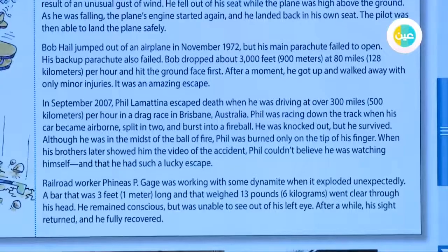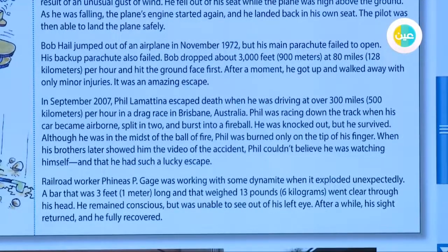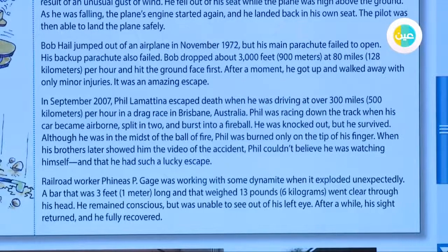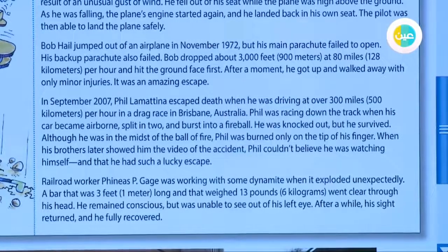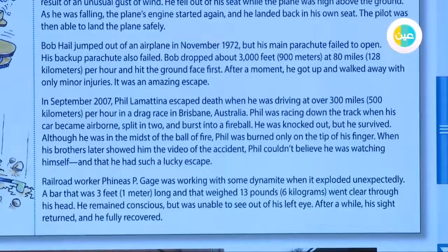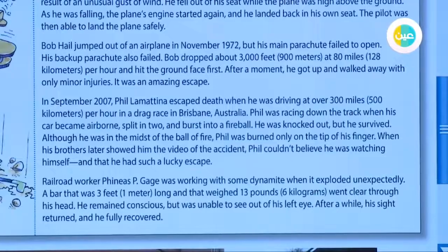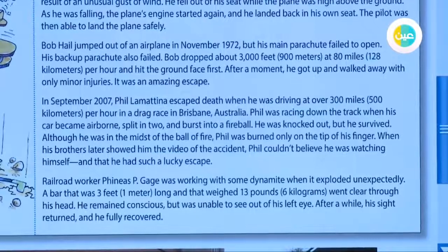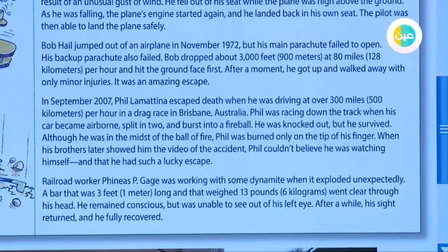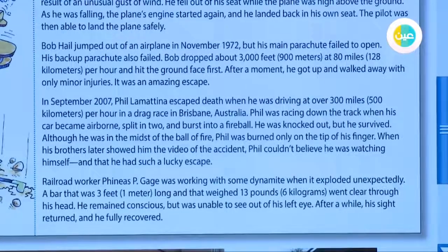In September 2007, Phil Lamattina escaped death while he was driving at over 300 miles, 500 kilometers per hour, in a drag race in Brisbane, Australia. Phil was racing down the track when his car became airborne, split in two, and burst into a fireball. He was knocked out, but he survived. Although he was in the midst of the ball of fire, Phil was burned only on the tip of his finger. When his brothers later showed him the video of the accident, Phil couldn't believe he was watching himself and that he had such a lucky escape.